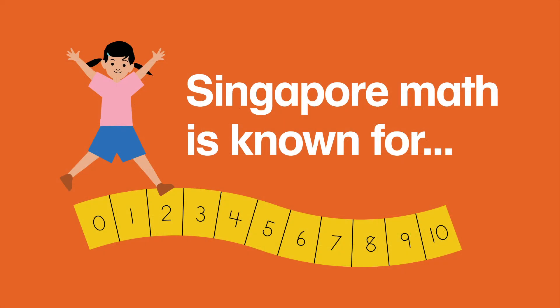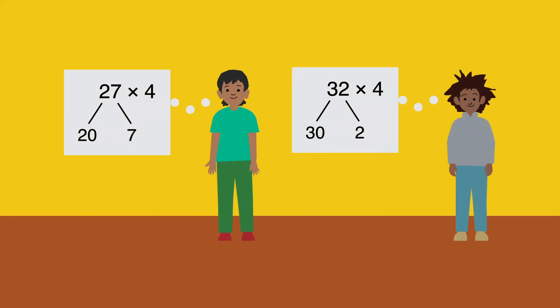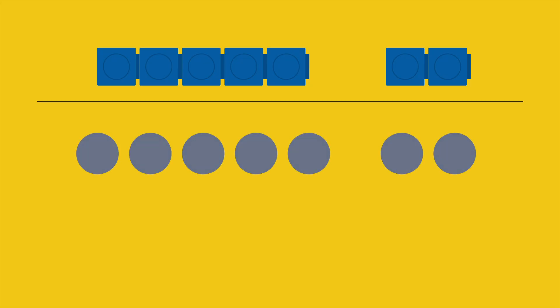Singapore Math is known for several key methods including number bonds and bar modeling. It emphasizes mental math and hands-on and visual learning, introducing concepts through tangible exploration and moving towards increased levels of abstraction.